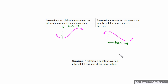Increasing and decreasing we're going to use a lot. The other thing a relation can do is be constant over some interval. A relation is constant over an interval if it remains at the same value. If we draw a graph that's completely flat — not increasing, not decreasing, going flat from left to right — the y value is constant, and so it's considered constant from here to here across this interval.